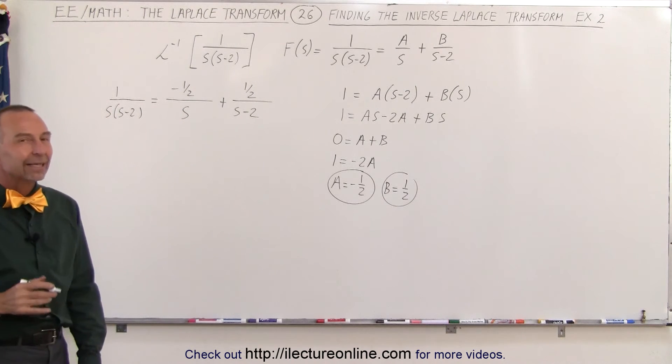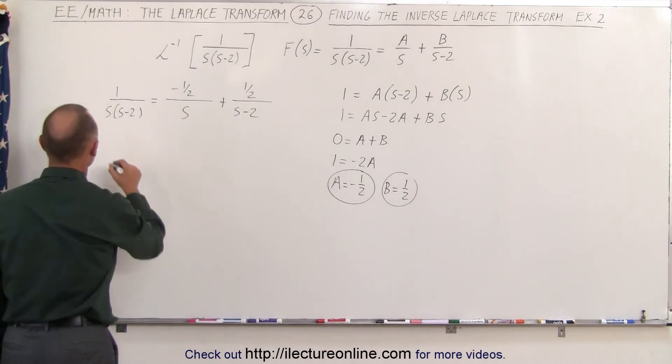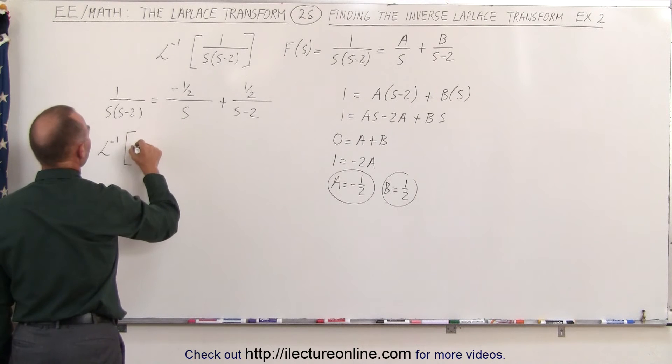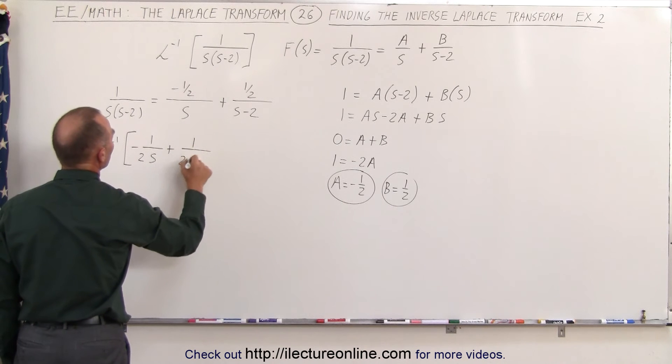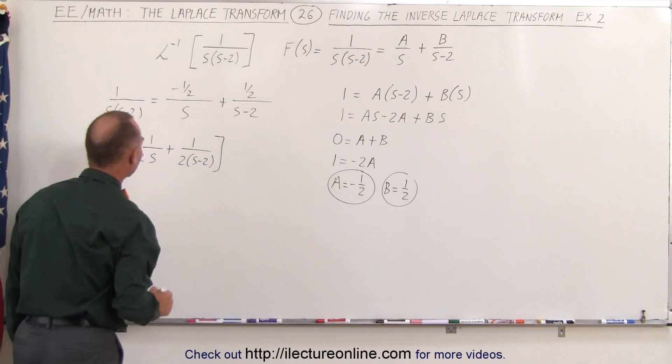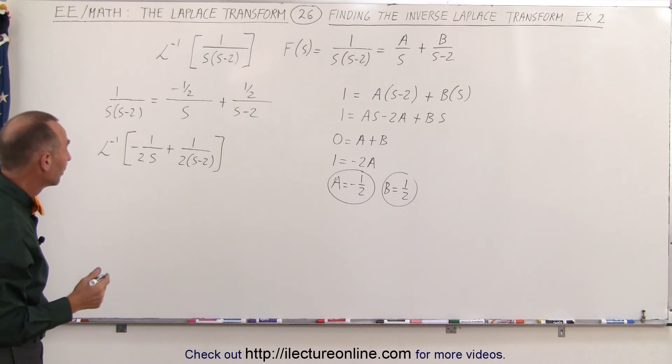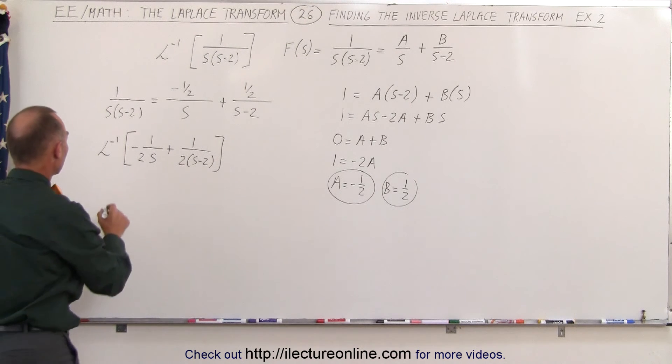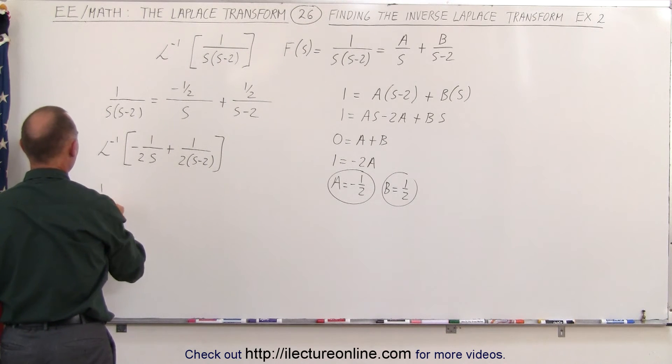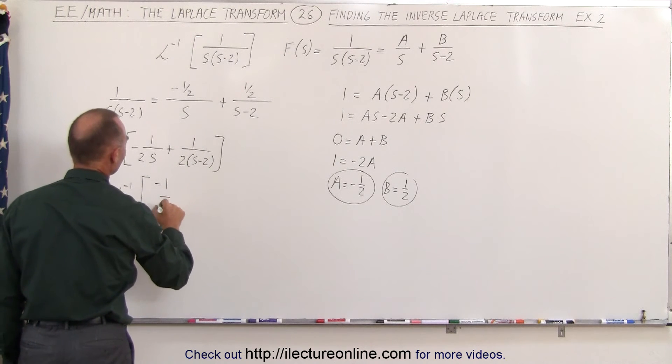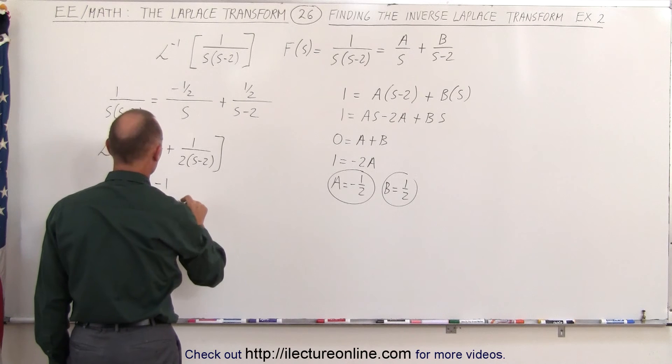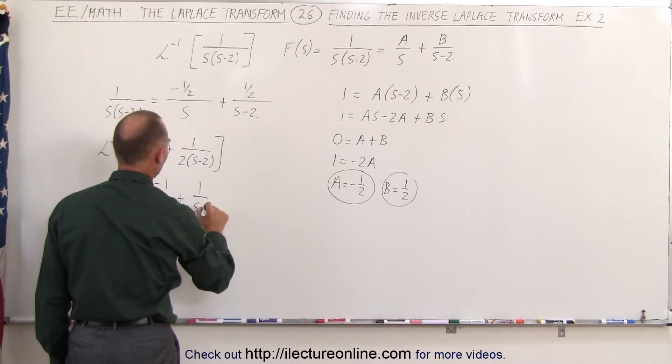If I now take the inverse Laplace transform of minus 1 over 2 times s plus 1 over 2 times s minus 2, and then realize I can factor out a 1 half, which means that this becomes 1 half times inverse Laplace transform of minus 1 over s plus 1 over s minus 2.